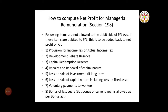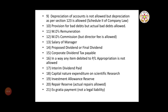The items not allowed on the debit side of P&L include: provision for income tax or actual income tax, development rebate reserve, capital redemption reserve, repairs and renewal of capital nature, loss on sale of investment if long term, loss on sale of capital nature including loss on fixed assets, voluntary payment to workers, bonus of last year (but bonus of current year is allowed as per the Bonus Act), depreciation as per accounts (but depreciation under section 123 is allowed, like Schedule II of company law), provision for bad debt (but actual bad debt is allowed), managing director's remuneration, MD commission (but director fee is allowed), salary of manager, proposed dividend or final dividend, corporate dividend tax payable, and any item debited to P&L appropriation.